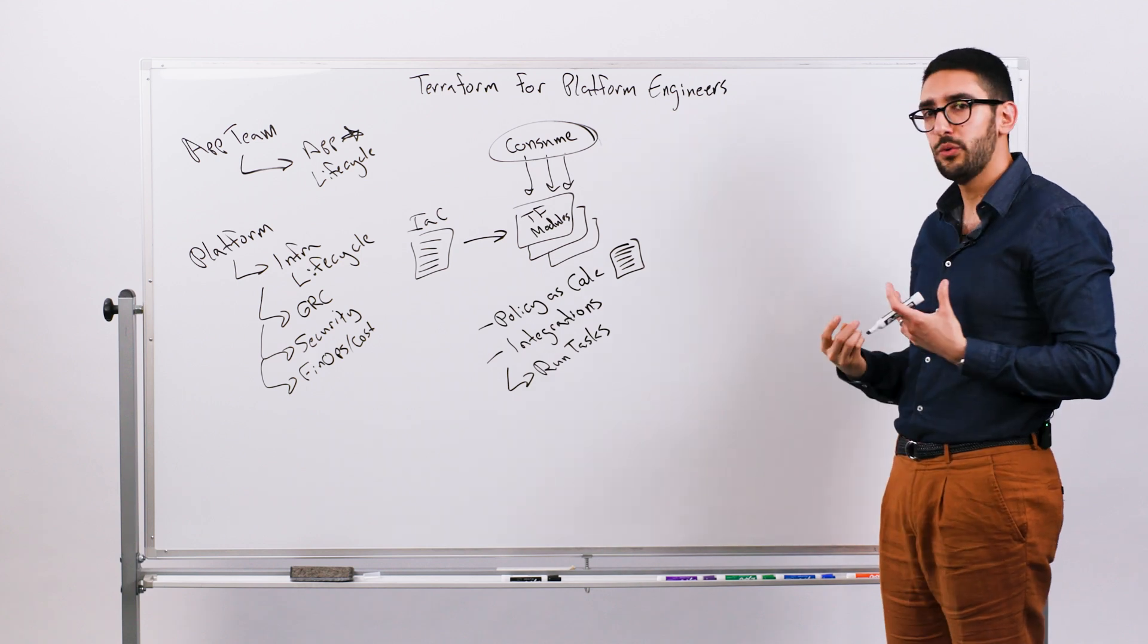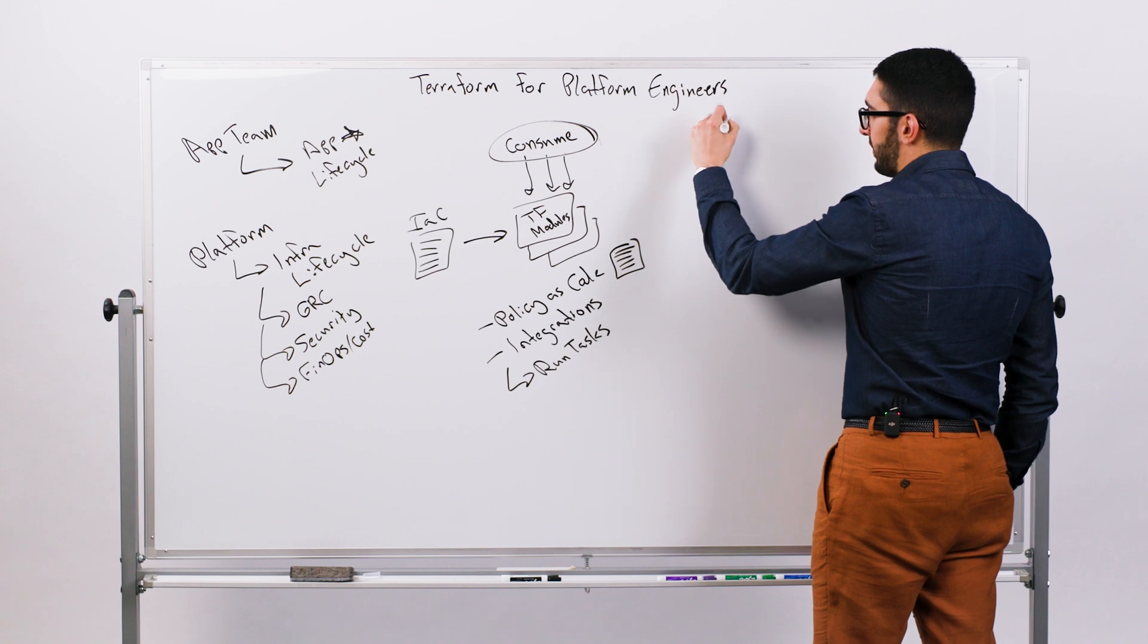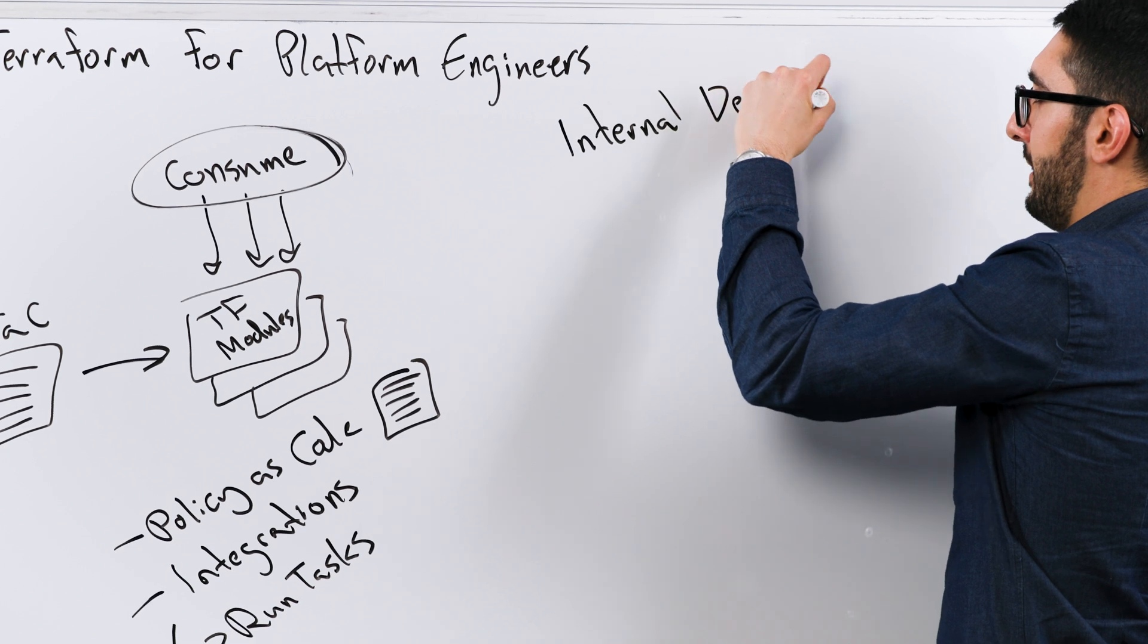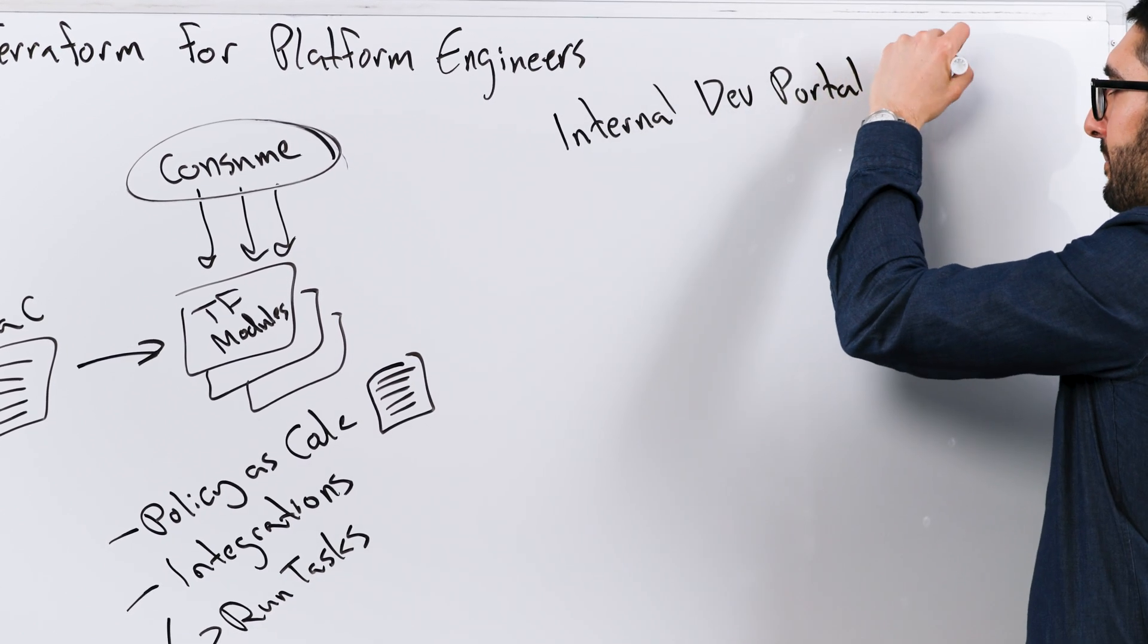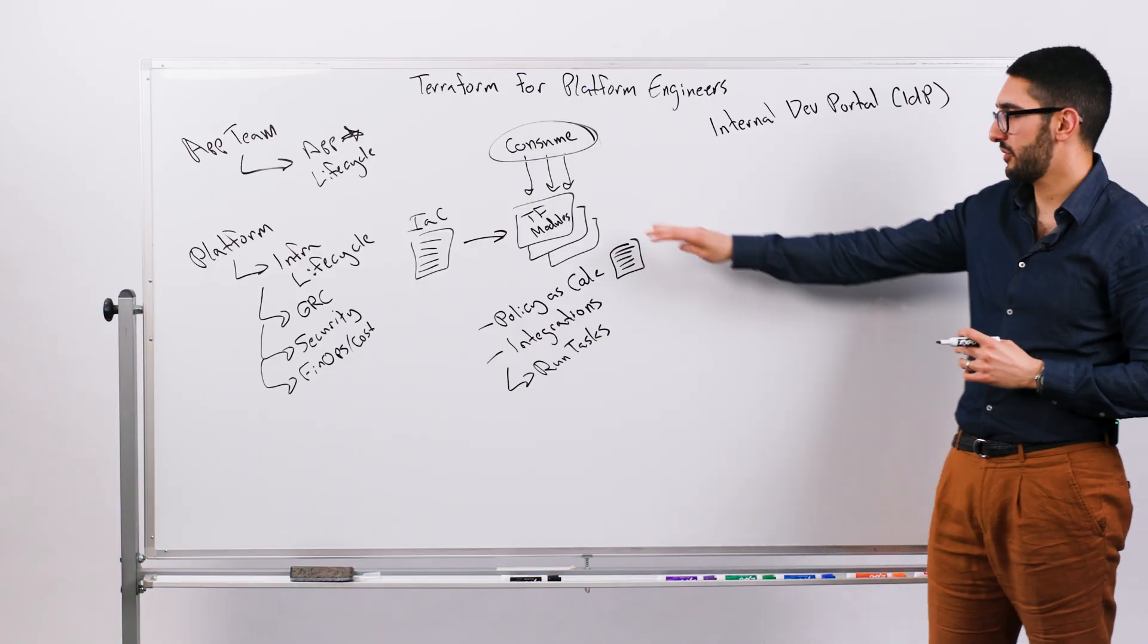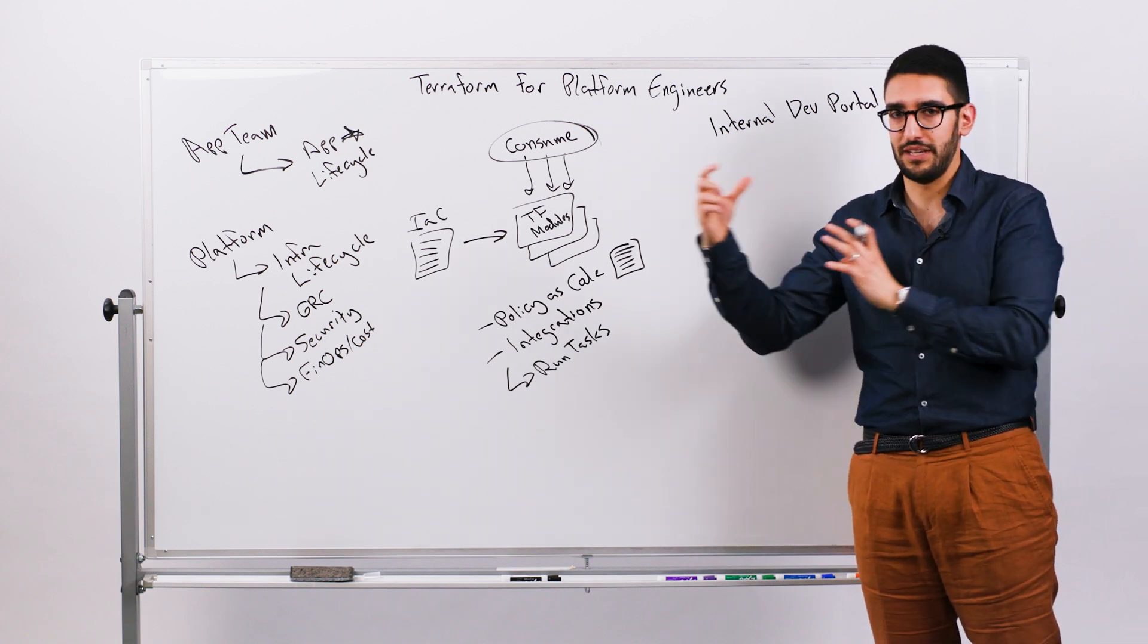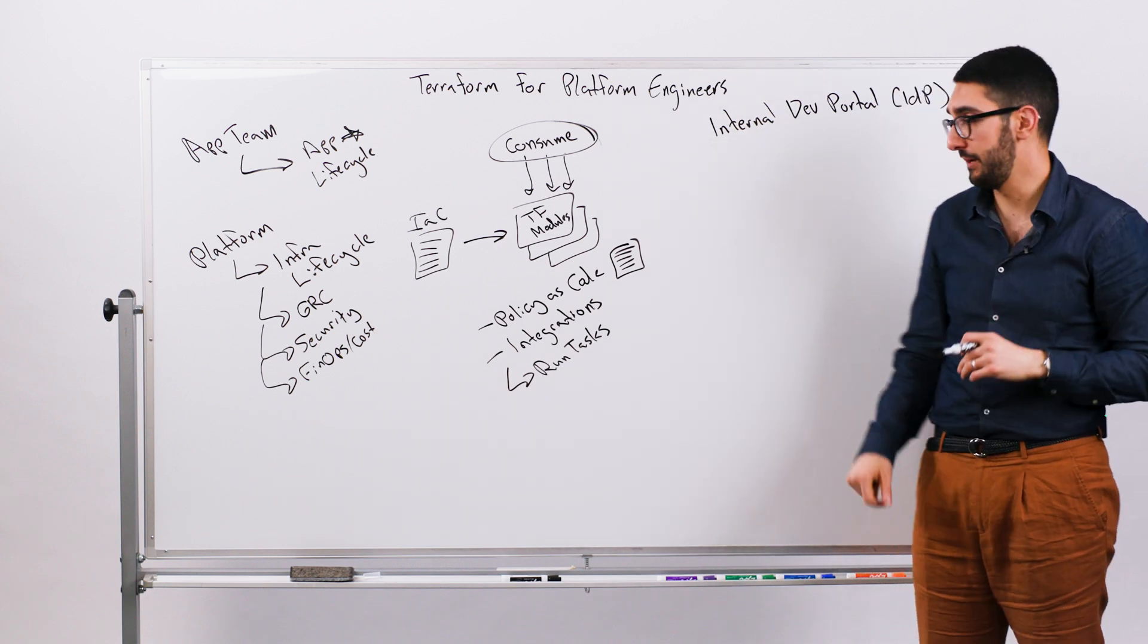So this starts to get you into the realm of things like internal developer portals. So if we think about an internal developer portal, you'll often hear these abbreviated because it's a mouthful to an IDP. Then the goal is really, how do I simplify that consumption experience for the app teams so that they don't have to think about infrastructure as code or Terraform necessarily. They can focus on, hey, I have a Java app. It needs a Mongo database. It has a Redis cluster associated with it. Make that happen for me.